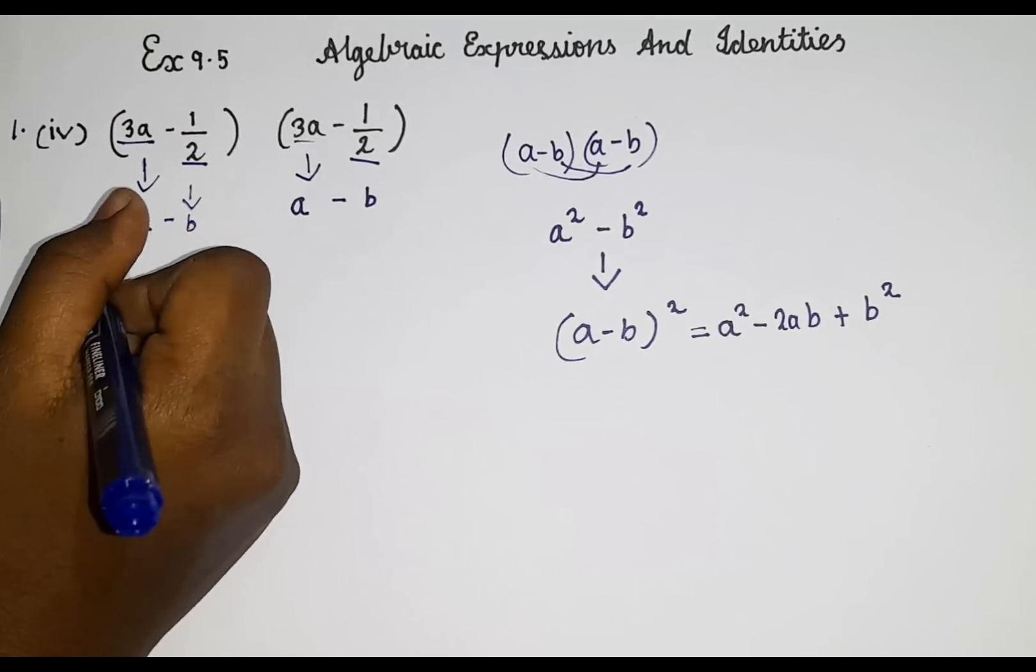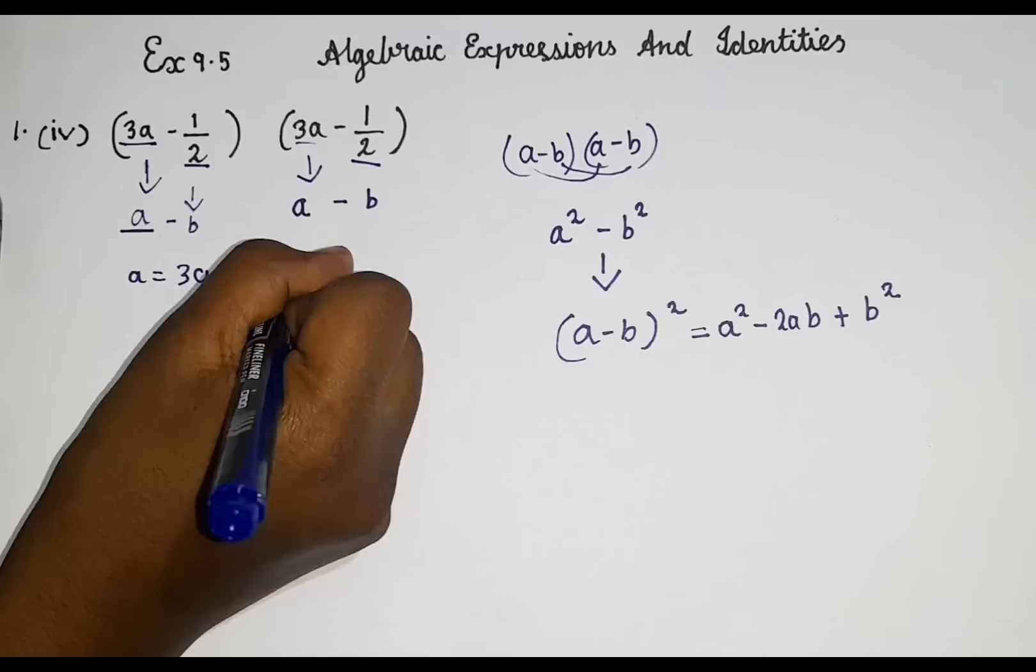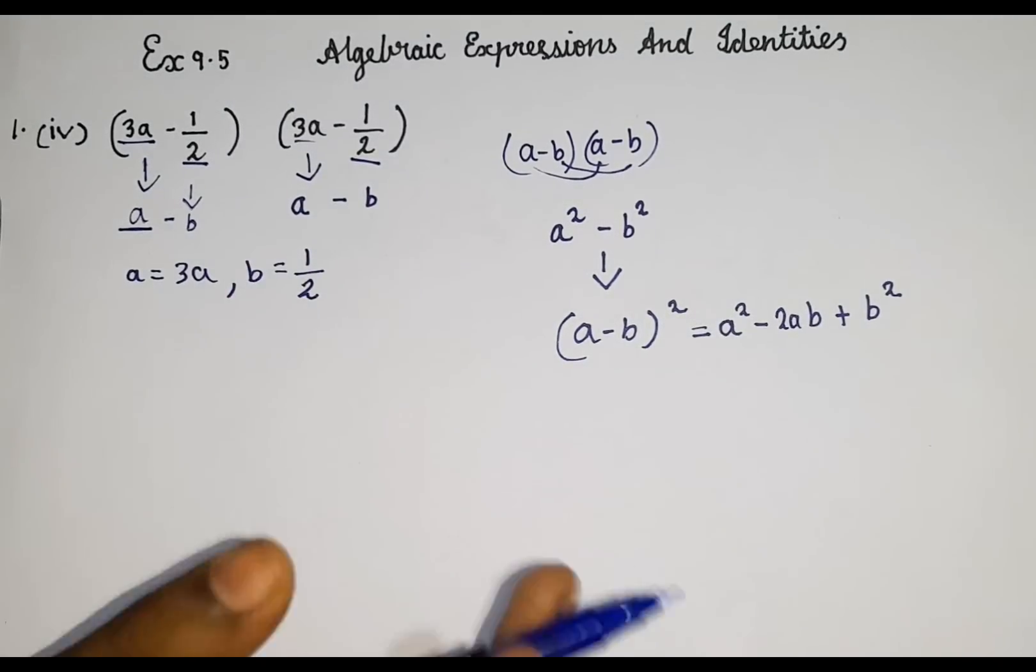So now let's apply the formula. First let's write a is equal to 3a, b is equal to 1 by 2. We will not mention the sign. Remember that.